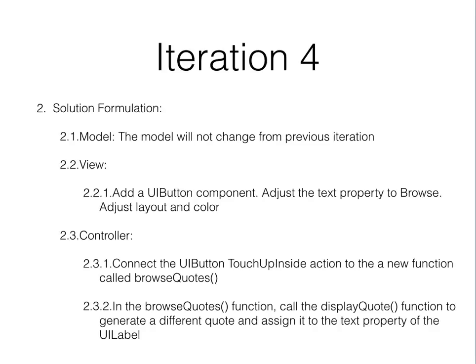For solution formulation, we have a model, a view, and a controller. The model we're not going to change — we already have the list loaded into memory represented as an NSArray, and each item is a string type. The view already has a label, so we need to add a UIButton component. The UIButton allows the user to click — it's the simplest user interaction. Set the button's text property to 'Browse' and adjust the layout and color as you like.